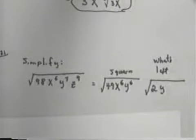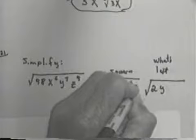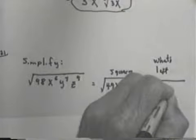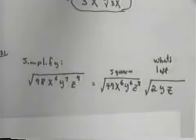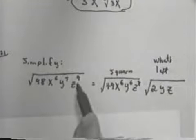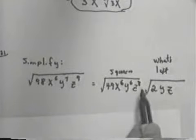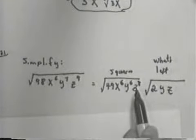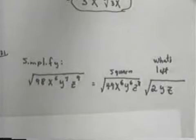I hope you picked z to the 8th, because z to the 8th times z gives z to the 9th, and you want to use the largest perfect square that you can divide into z to the 9th, so you can factor it into z to the 8th times z.